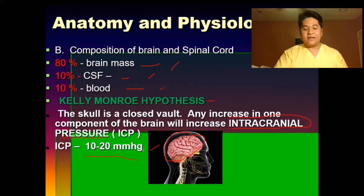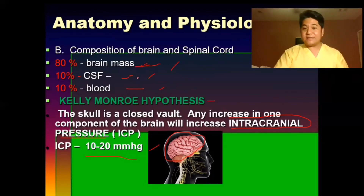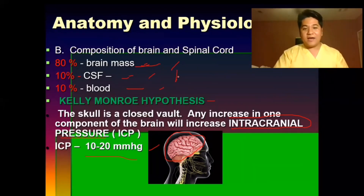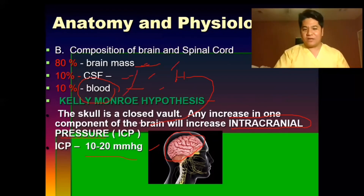Any increase in ICP can result from inflammation or increase in brain tissue, an increase in CSF due to obstruction leading to hydrocephalus, or blood issues such as leaks, aneurysm, or clotting, which lead to inflammation and increased ICP.